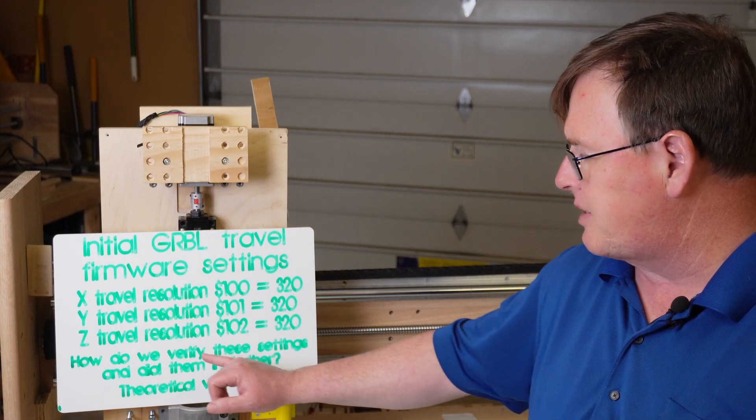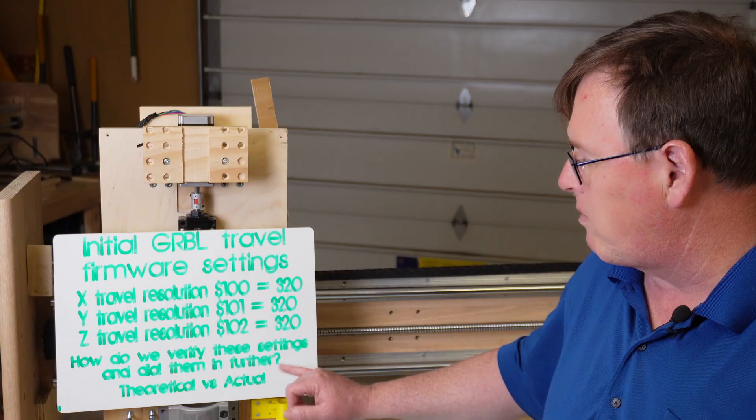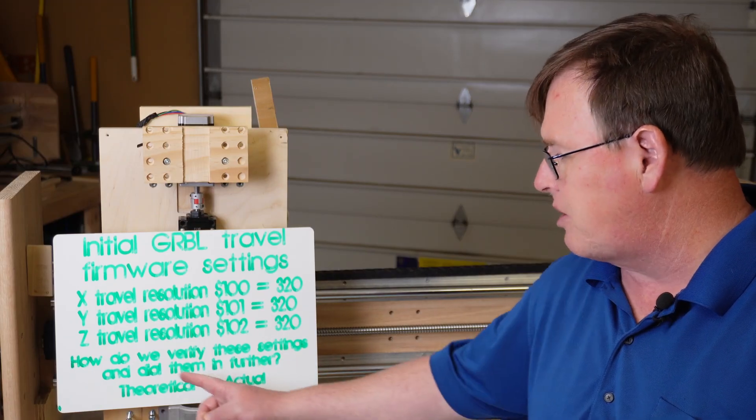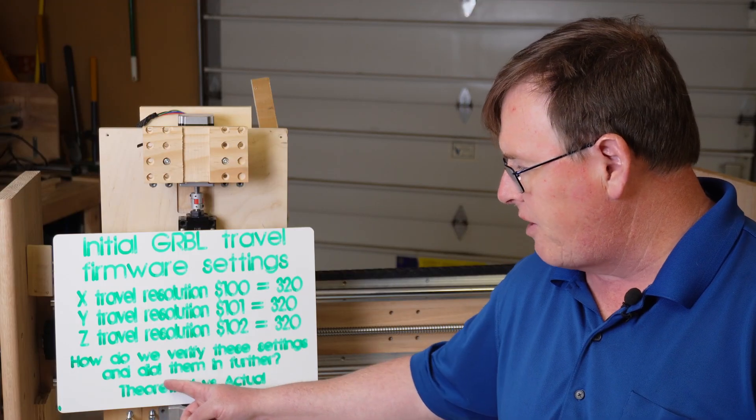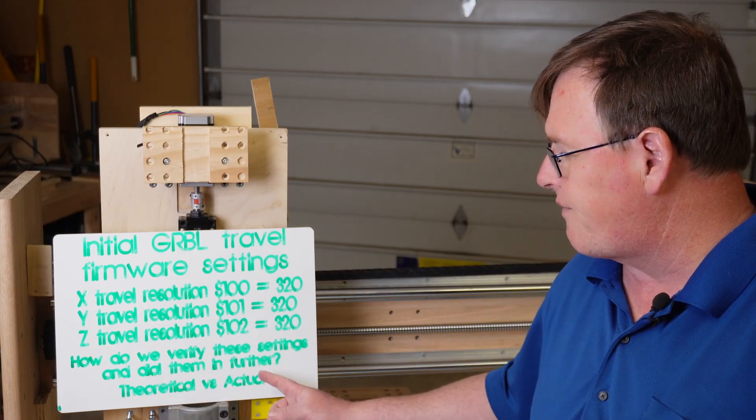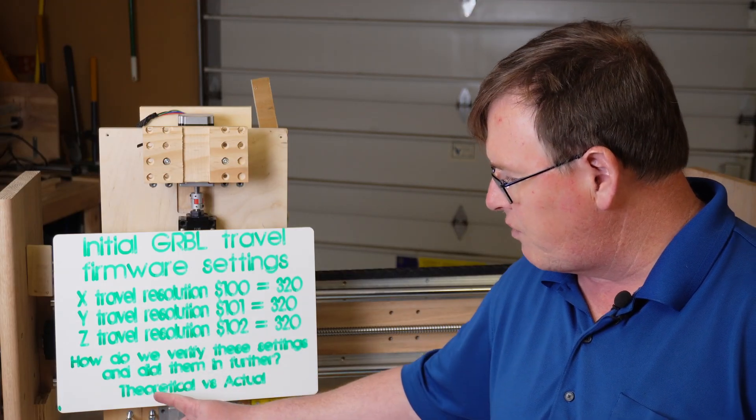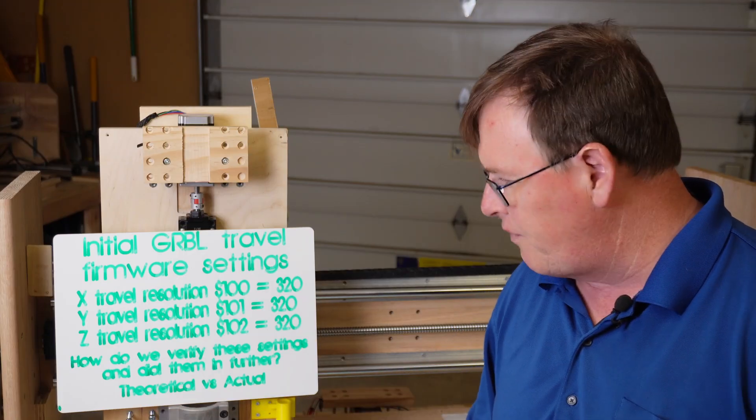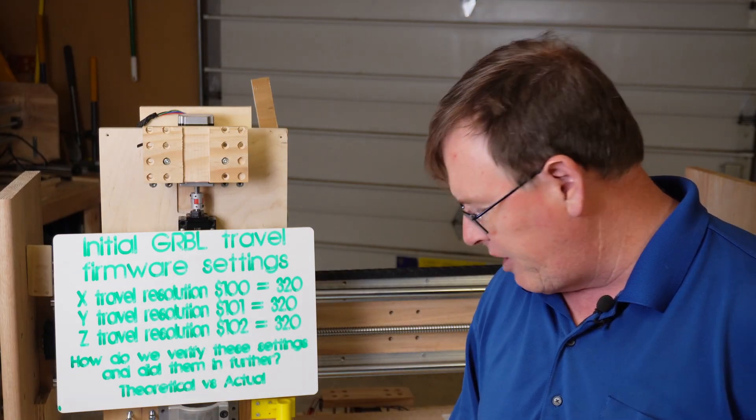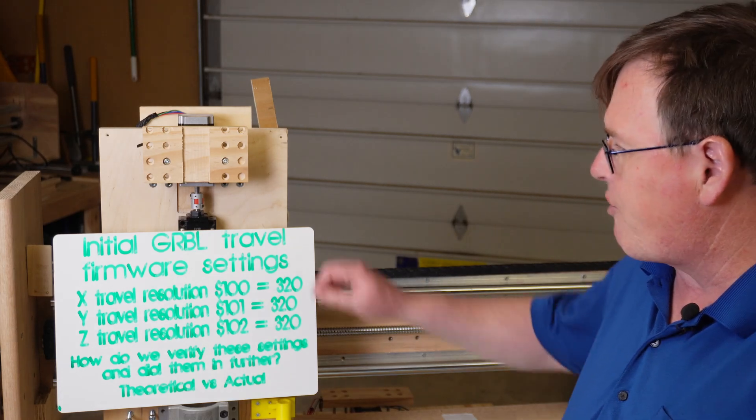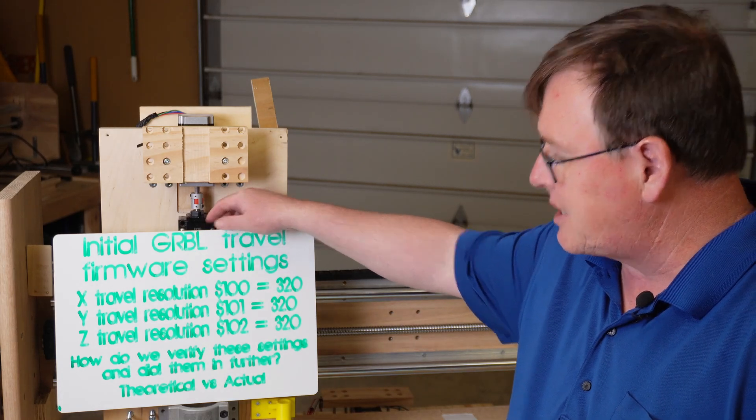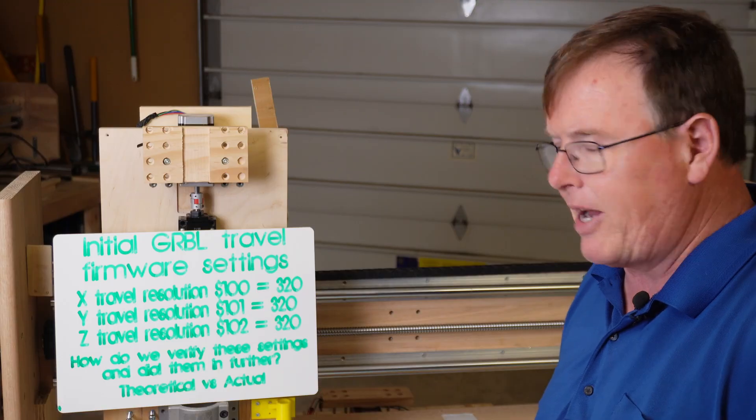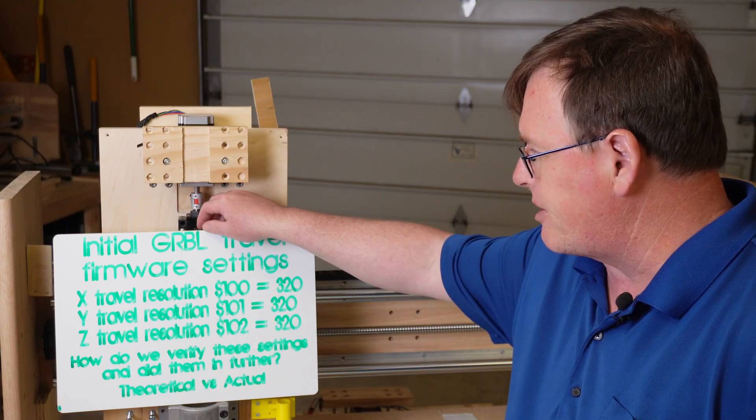Our goal today is to verify that when we run these settings that they are indeed moving the distance that we expect and then also if they are different how to dial those settings in further. It is an issue of what we theoretically think we're going to move compared to what we're going to actually move and it's something you definitely want to address when you're building your own CNC or even if you bought a manufactured one you very well may be able to increase how accurate your CNC is.